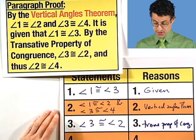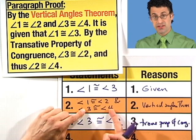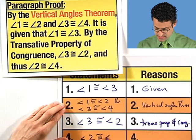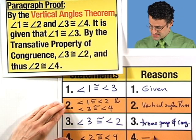And then, again, using the transitive property, I see since angle three is congruent to angle four, and angle three is congruent to angle two, then four and two must be congruent. So two is congruent to angle four, and that's by the exact same reason.